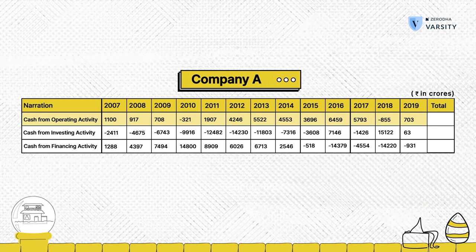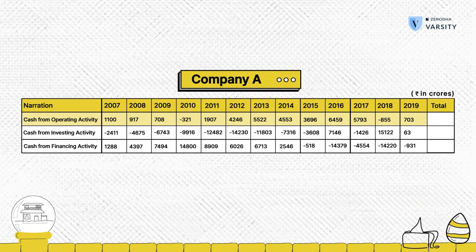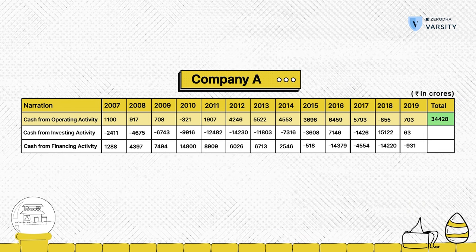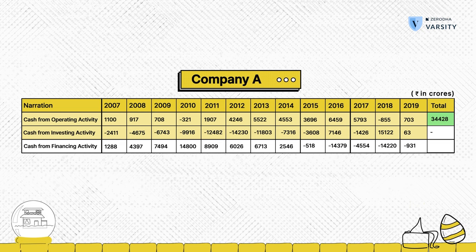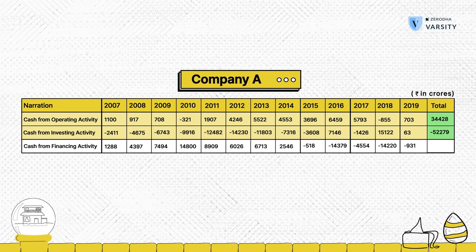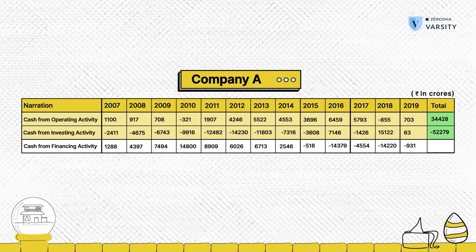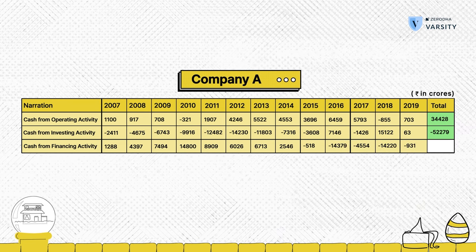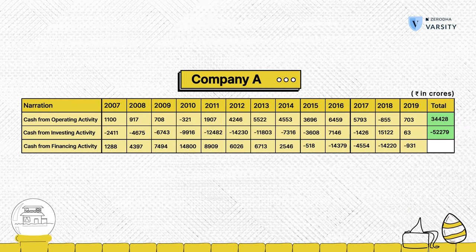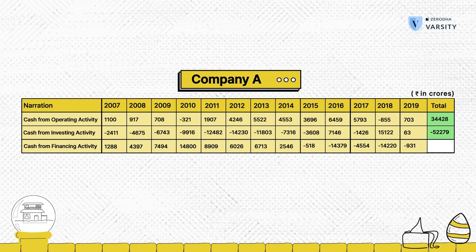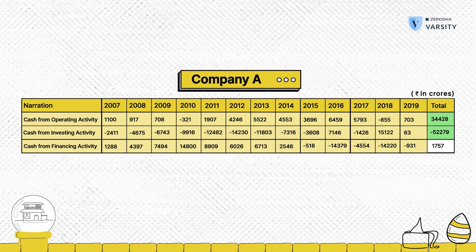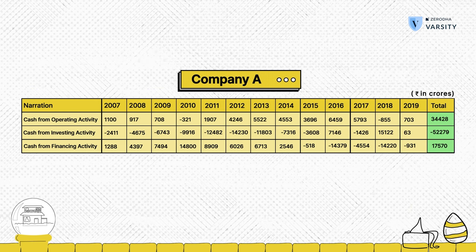Summing up all the numbers, this company has generated roughly 34,000 crores from operations, but has invested close to about 52,000 crores. The question you need to ask is: where is the money coming from? Obviously it is coming from the financing activity, which means the company must have borrowed to the extent of about 17,000 crores. And as you can see, the sum total from the financing activity is 17,500 crores — a positive number, which means the financing activity is generating cash.